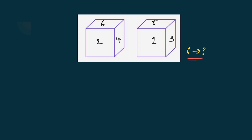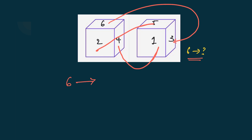The given dice — find the number opposite to six. Check step one: same number on same face — not present. Since all numbers are different on both dice, this is step three. Applying the logic: first dice top is opposite to second dice right; first dice front is opposite to second dice top; first dice right is opposite to second dice front. From this, the opposite number to six is three.